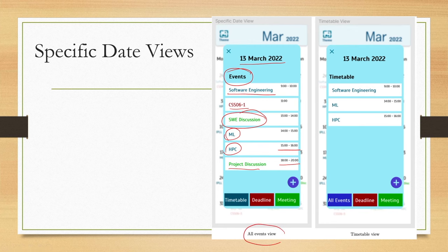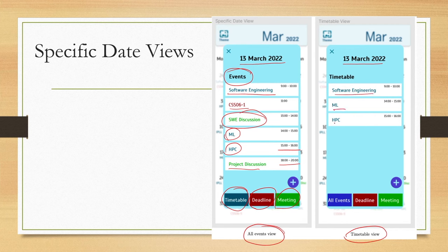This is the 'all events' view. At the bottom there are options: timetable, deadlines, meetings. If we select timetable, only classes are shown — software engineering, ML, high performance computing — along with class timings. Other events like discussions from the all-events view are not shown.